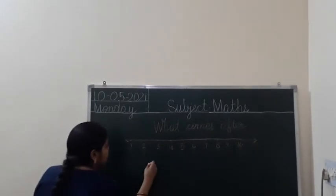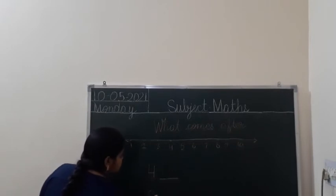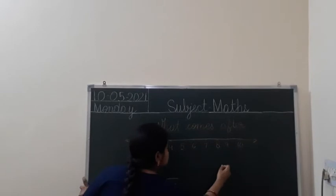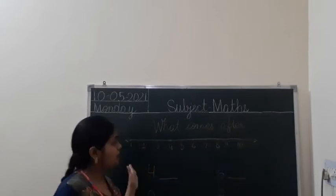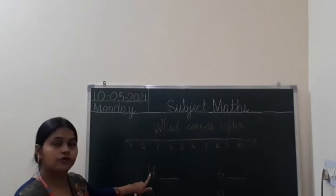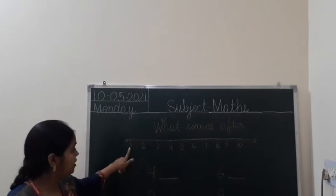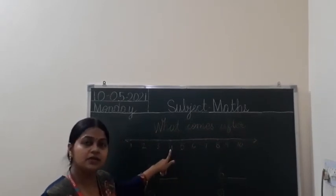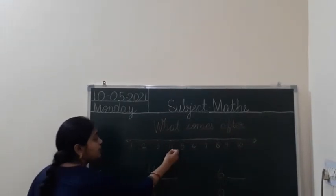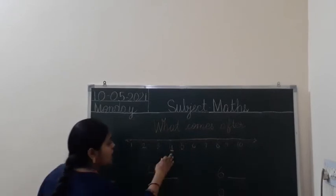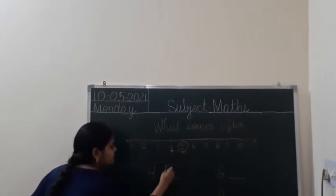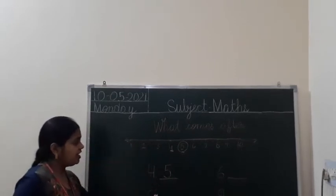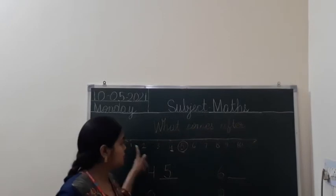Now I am going to write some numbers — 4, 8, 6, 9. How will we find out what comes after? Read this number: 4. Find out where is 4 on the number line. What comes after 4? It means 5 — 5 comes just after 4. So I will write here number 5. It is very easy to find out what comes after using the number line.